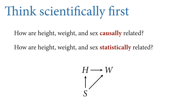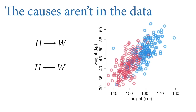To do something sensible statistically, we have to think scientifically first. There's a distinction between how height, weight, and sex are causally related versus statistically related. Height, weight, and sex are statistically associated in quite strong ways in every human population. But their causal relationships are not obvious from those associations, so we have to think. We're going to build up a heuristic causal model — a DAG, a directed acyclic graph — introduced in the first lecture of the course. The causes of these variables aren't in the data themselves, but the data reflect the causal relationships. You can't simply read the causal effects off the data.